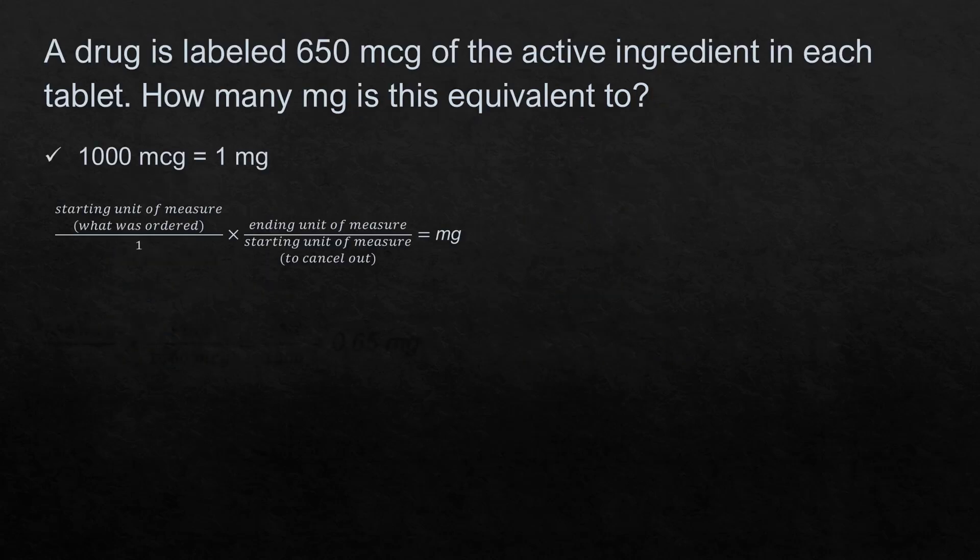A drug is labeled 650 micrograms of the active ingredient in each tablet. How many milligrams is this equivalent to? This is a simple conversion problem. To convert this, we need to know how many micrograms are in a milligram. From our conversion chart, there are 1,000 micrograms in one milligram. We're going to use dimensional analysis: the first part is the starting unit of measure, the second part is our conversion. On top we put our ending unit of measure, and on the bottom we put the starting unit to cancel out, because we work diagonally in dimensional analysis.